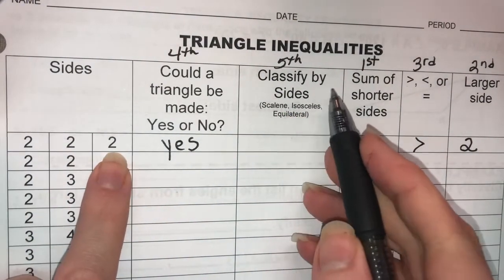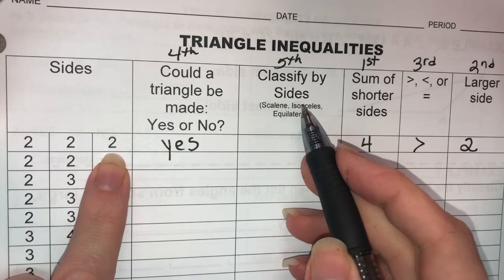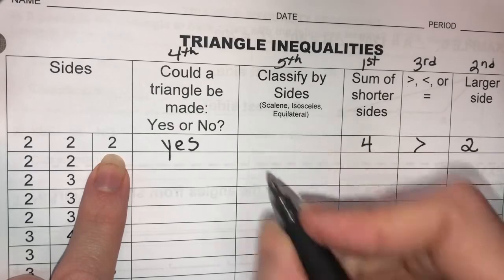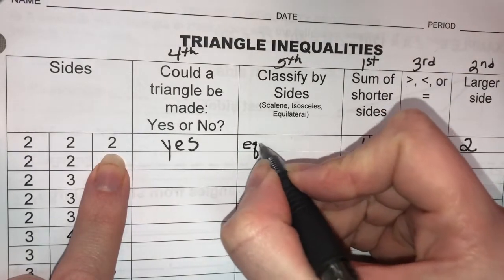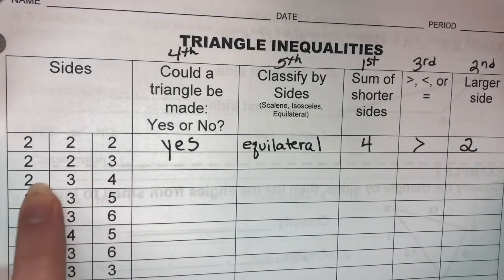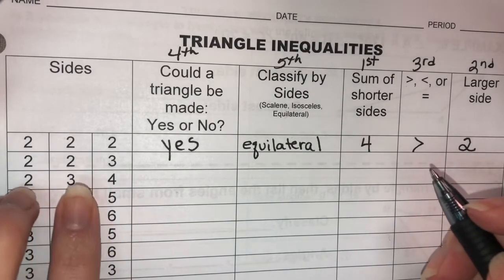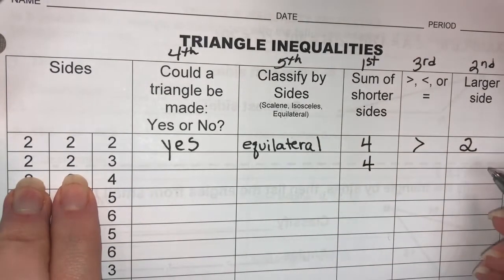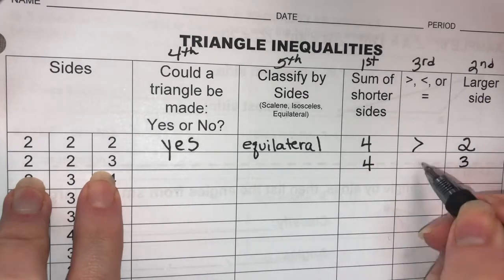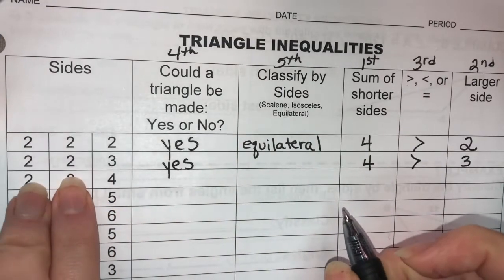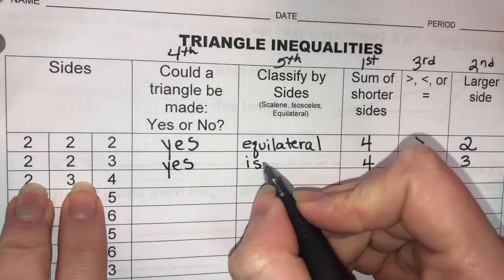If all three sides have the same length, we can classify the triangle as equilateral. We learned those words back earlier this school year. So let's go to the next one. Add the two shorter sides. The two shorter sides here would be 2 and 2, so that makes 4. Then the largest side is 3. 4 is greater than 3. So could a triangle be made? Yes. And if two sides are the same, we would call it isosceles.